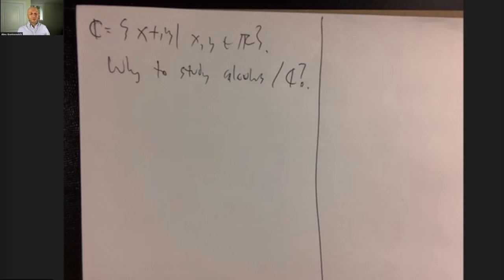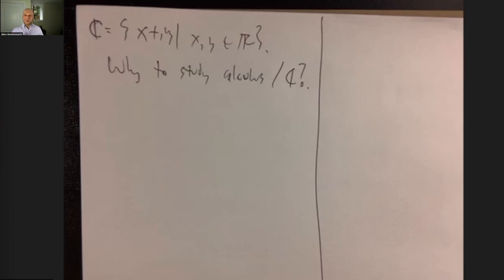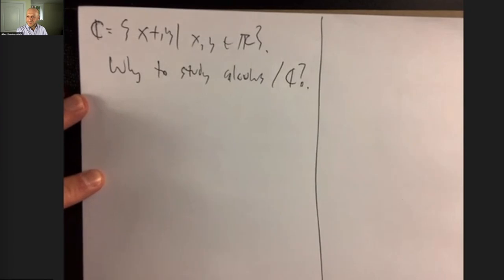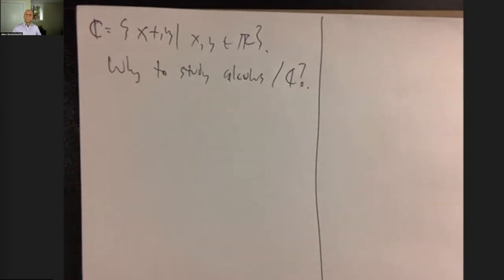People started studying complex numbers long before they understood any of those things — they were studying polynomials. What do you need complex numbers in order to be able to solve? You need to solve x squared plus one, for example. Yes, exactly. And Ishan adds: they wanted to solve cubic polynomials, and had to use complex numbers to get to the solution — and they said this doesn't make any sense.